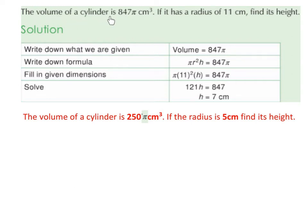The volume of a cylinder is 847π cm³. If it has a radius of 11 cm, find its height.